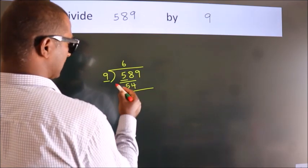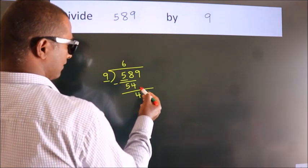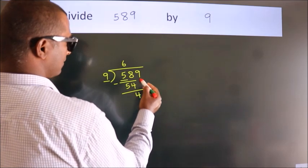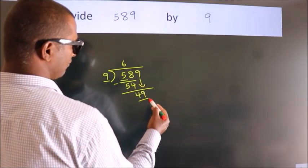Now we should subtract. We get 4. After this, bring down the next number. So 9 down. So 49.